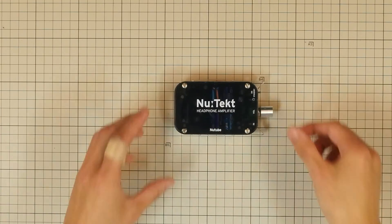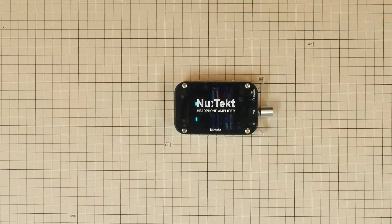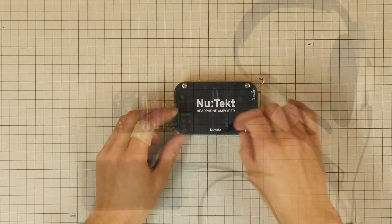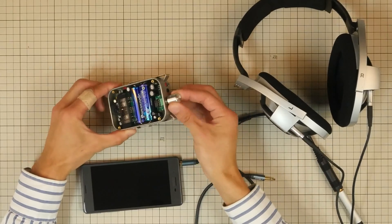The main board comes pre-adjusted at the factory, so you don't have to do anything generally. But if you notice a difference in volume between left and right, you can adjust the balance using a trim pot on the main circuit board.